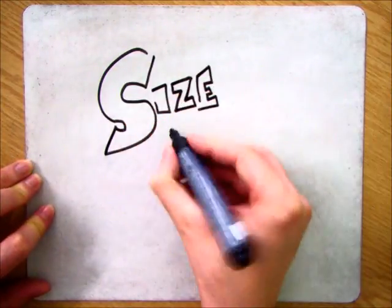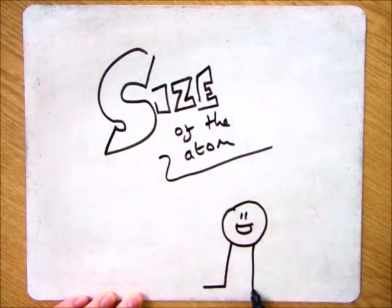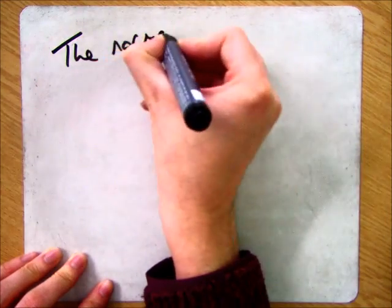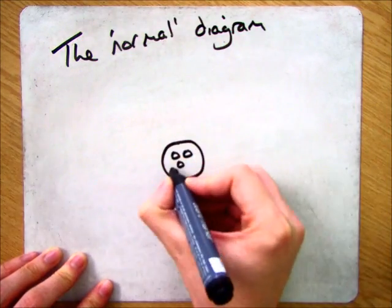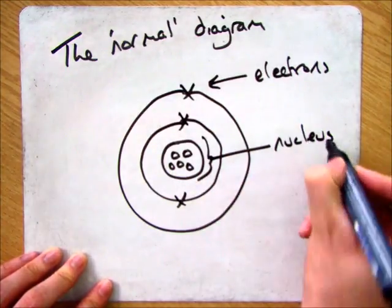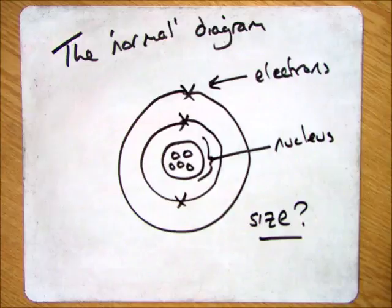This video is going to focus on the size of the atom, and in particular, the relationship between the nucleus and the rest of the atom. When you see a diagram of the atom in textbooks or on the board, you'll notice that the actual nucleus looks quite big in relation to the rest of the atom. However, that's not the case.